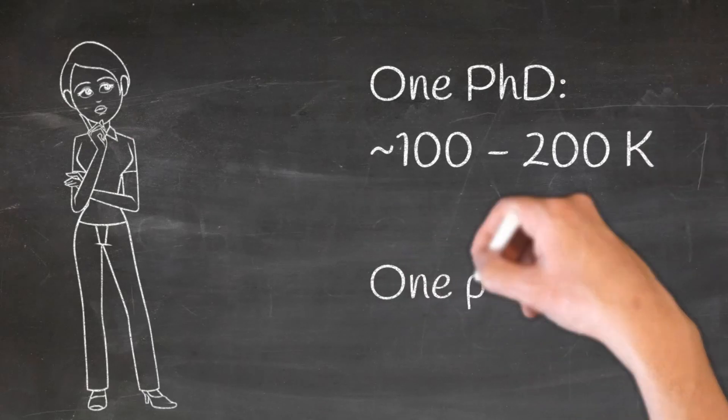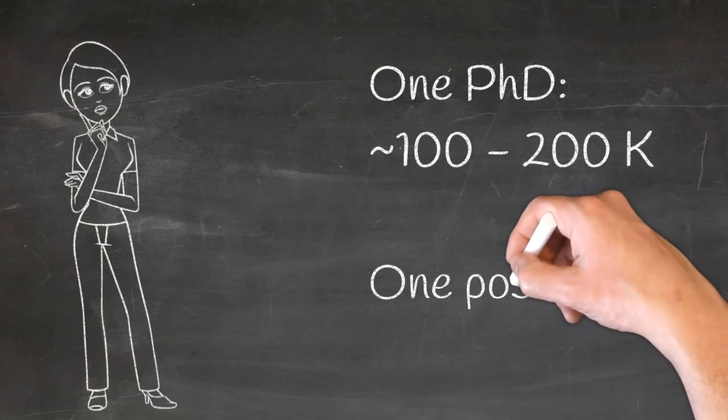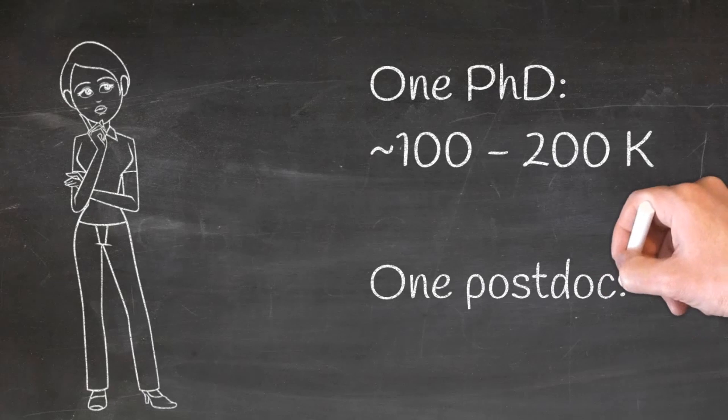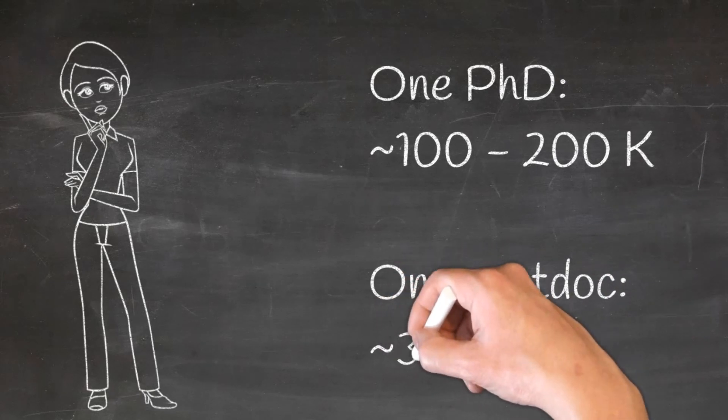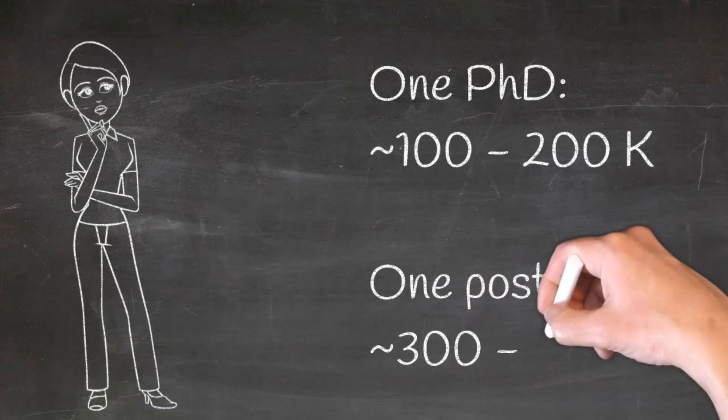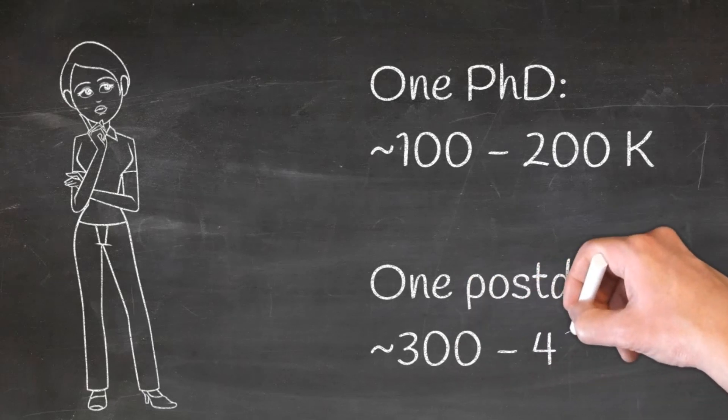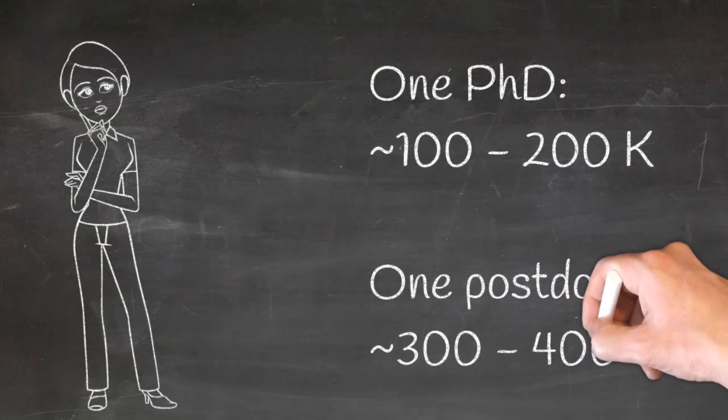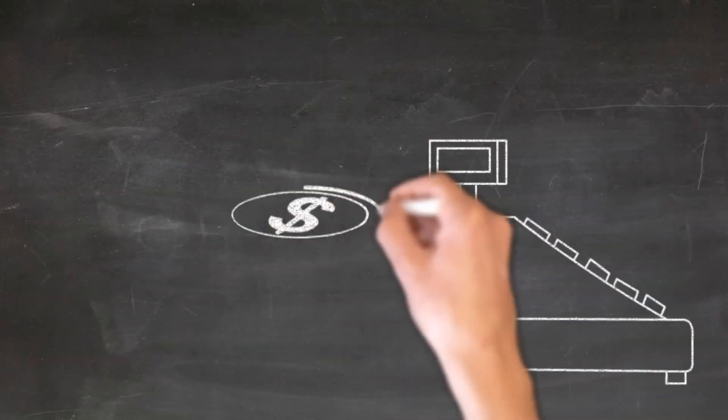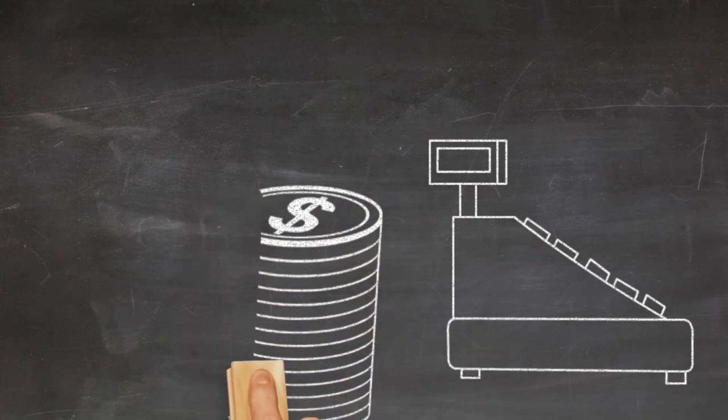So for a postdoc, it costs a little bit more. Postdocs are fully qualified, so they generally demand a proper salary. And that's where those overheads to the university really come in and do some extra costs around that as well. So you're talking about £300,000 to £400,000 for a full project that takes a few years to complete. And an example of my fellowship cost just over £300,000 for three years.